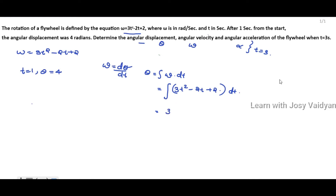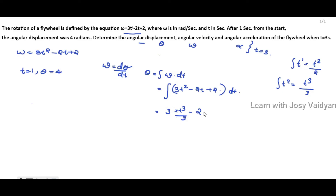Integrating omega equals 3t squared minus 2t plus 2: the integral of 3t squared gives t cubed divided by 3, multiplied by 3, which is t cubed. The integral of 2t gives t squared divided by 2, multiplied by 2, which is t squared. The integral of the constant 2 gives 2t, since there is no t to integrate with a power. So theta equals t cubed minus t squared plus 2t plus C.